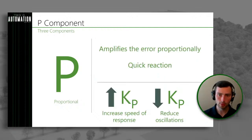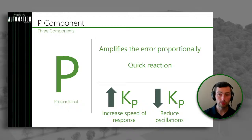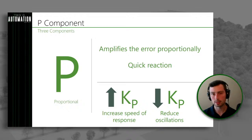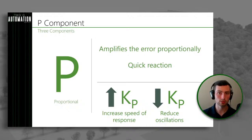First is the P component — the proportional component. What it does is amplify the error proportionally, which helps improve the reaction time to errors. We do that with something called a gain. The proportional gain is typically denoted as KP. If we increase KP, that increases the speed of the response, but if you increase it too much, you may introduce oscillations into the system. If you decrease KP, you'll reduce oscillations but also reduce the speed of the response. There's always a balance.